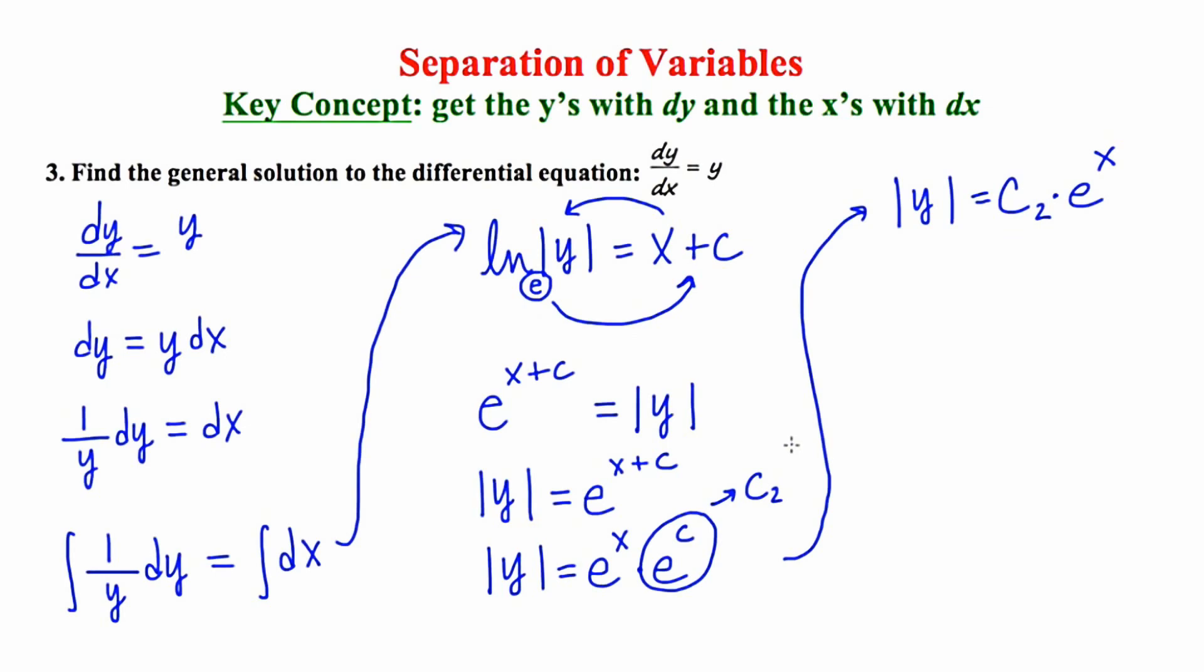We're almost done by the way. Now when you have an absolute value equation to solve, you're supposed to set up two new equations. The first one would be y is equal to c sub two times e to the x. And the second would be y equals negative c sub two times e to the x.